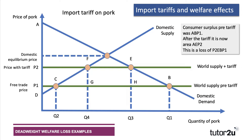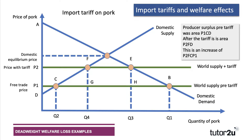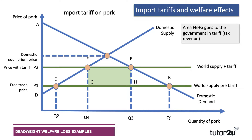Essentially, what the tariff does is cause a transfer of consumer welfare to other agents in the economy. Chinese pork producers gain, because they can now sell more pork Q4 at a higher price P2. So whereas the initial producer surplus was low at P1, C, D, after the tariff producer surplus goes up to P2, F, D — which is an increase of P2, F, C, P1. So there's been a significant increase in producer surplus. The government also gets some tax revenue, since tariffs and customs duties generate revenue for governments. They get the tax per unit multiplied by the quantity of imports, so they receive area F, E, H, G — which also used to be consumer surplus, now transferred to the government as tax revenue.